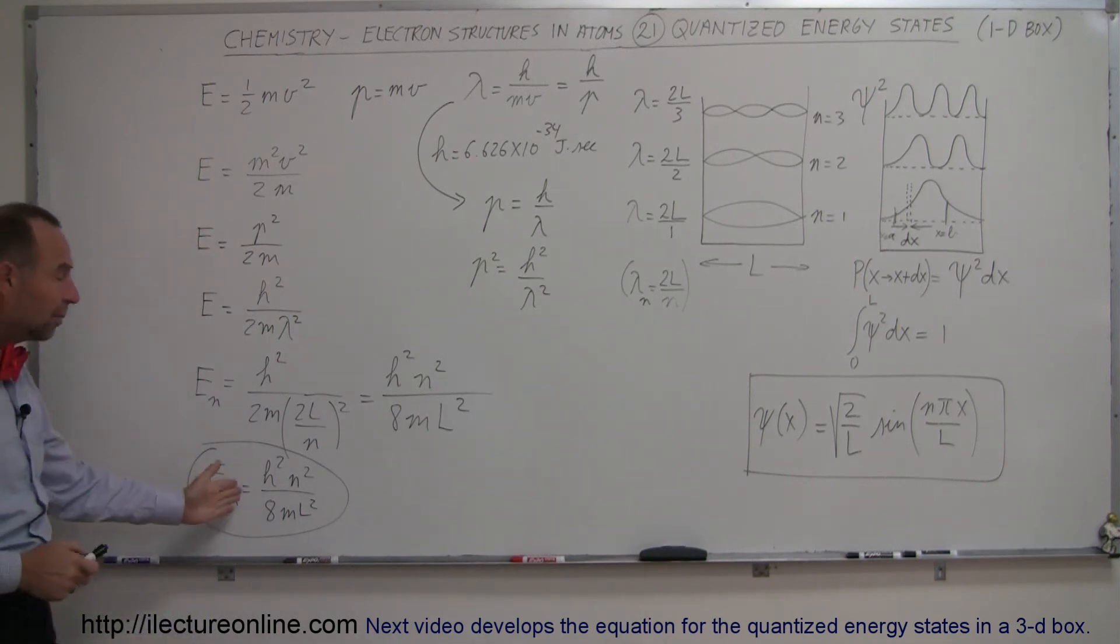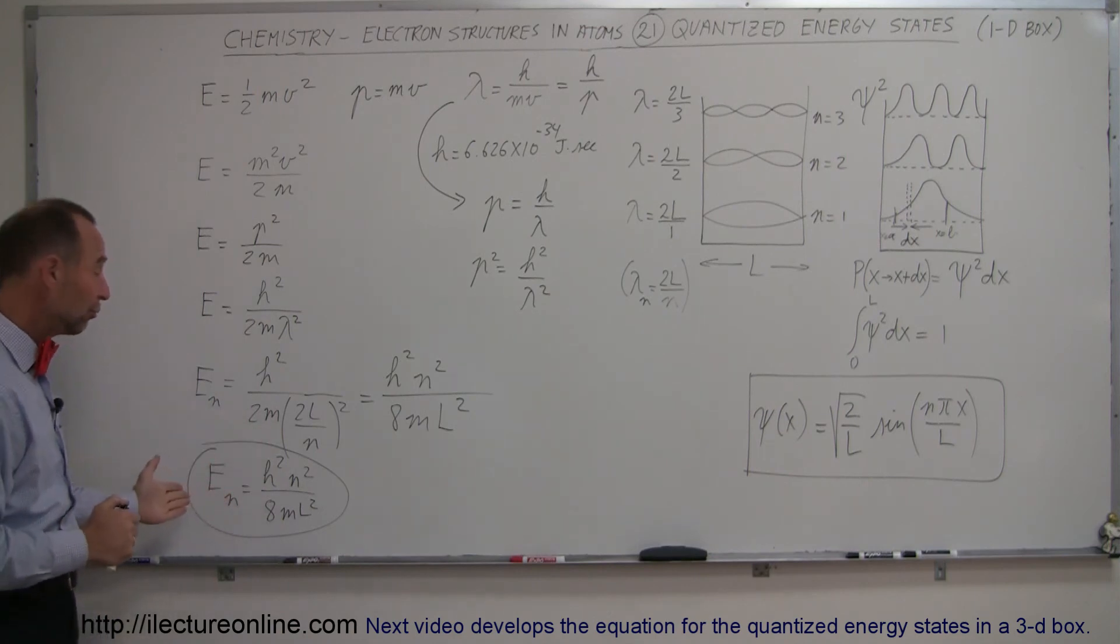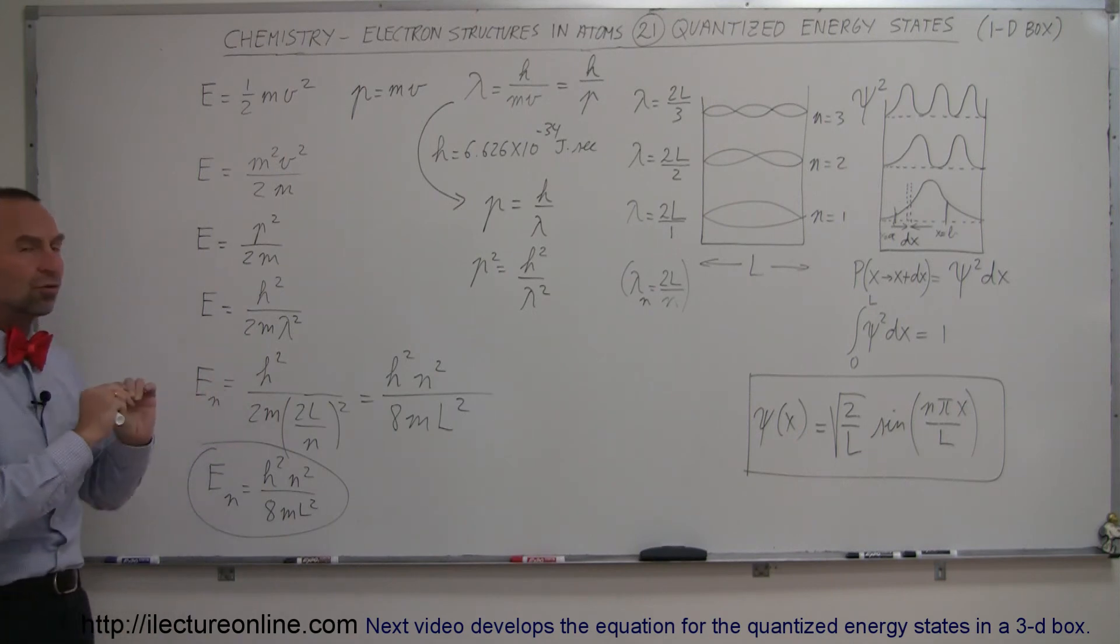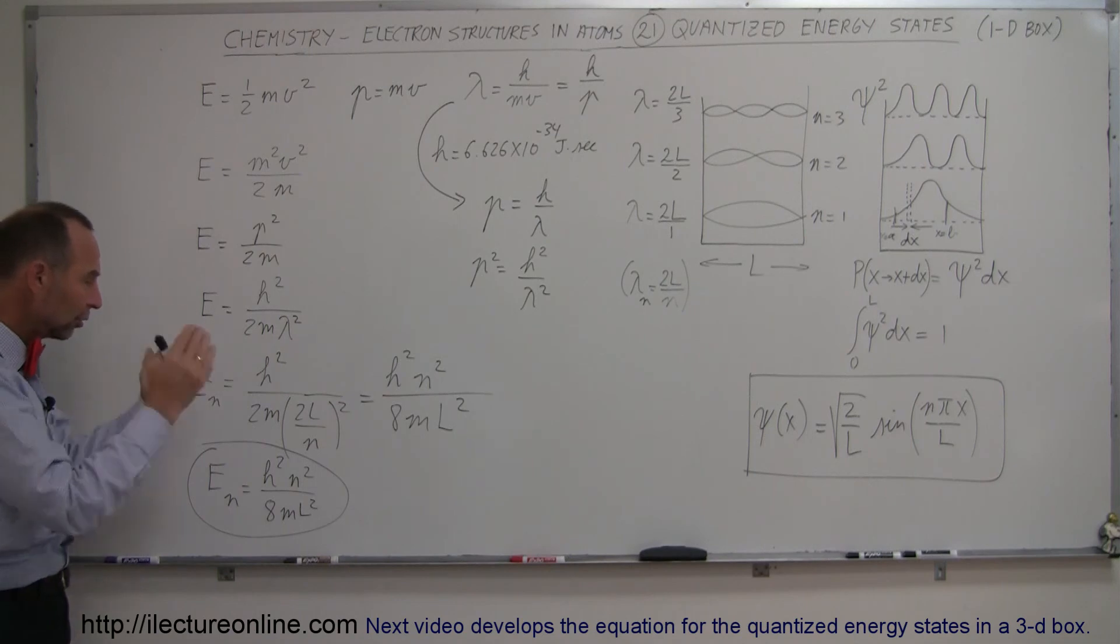So, if this is true for a one-dimensional box, this has to be true for orbits around nuclei of an atom. So, this is the way in which we're going to try to define how electrons exist around the nucleus of atoms.